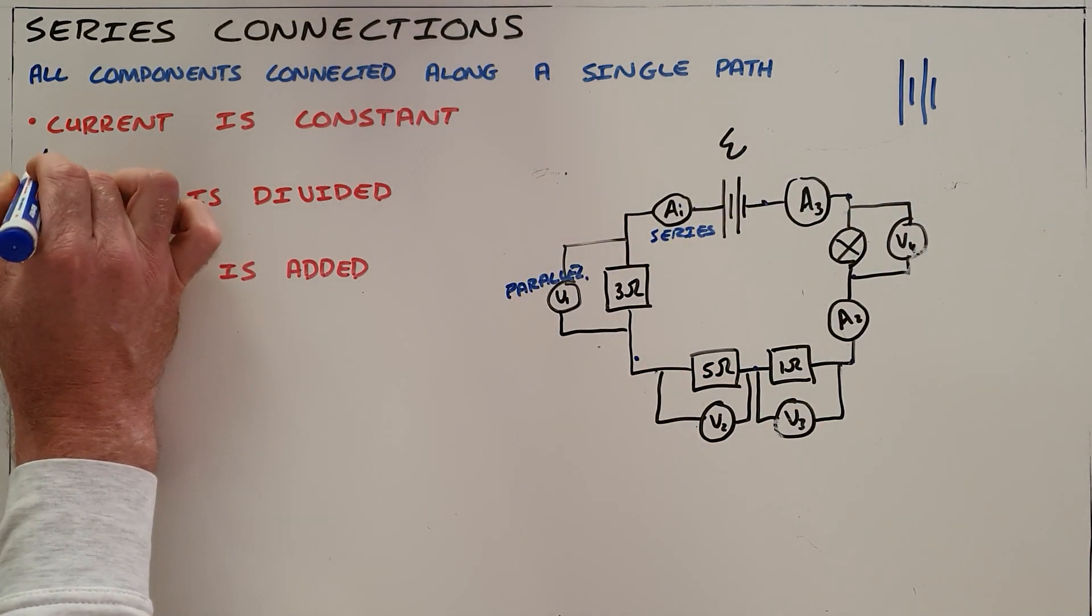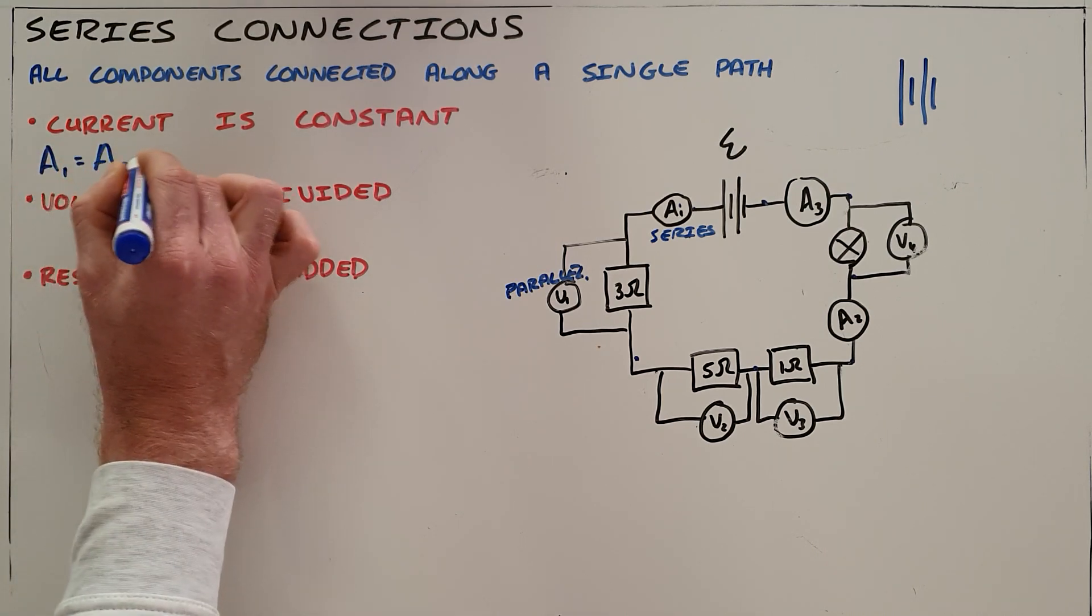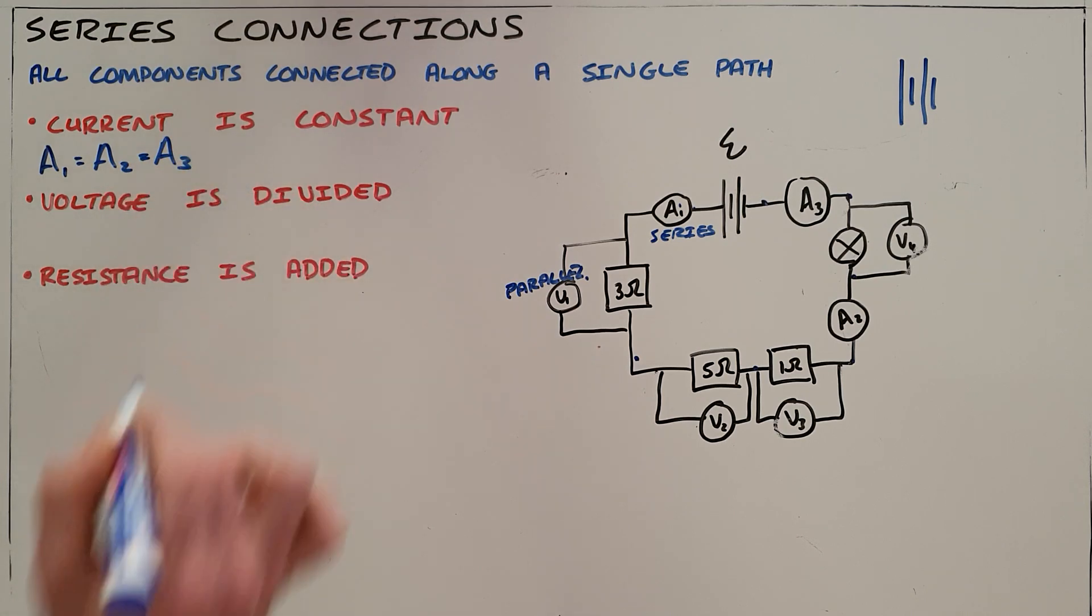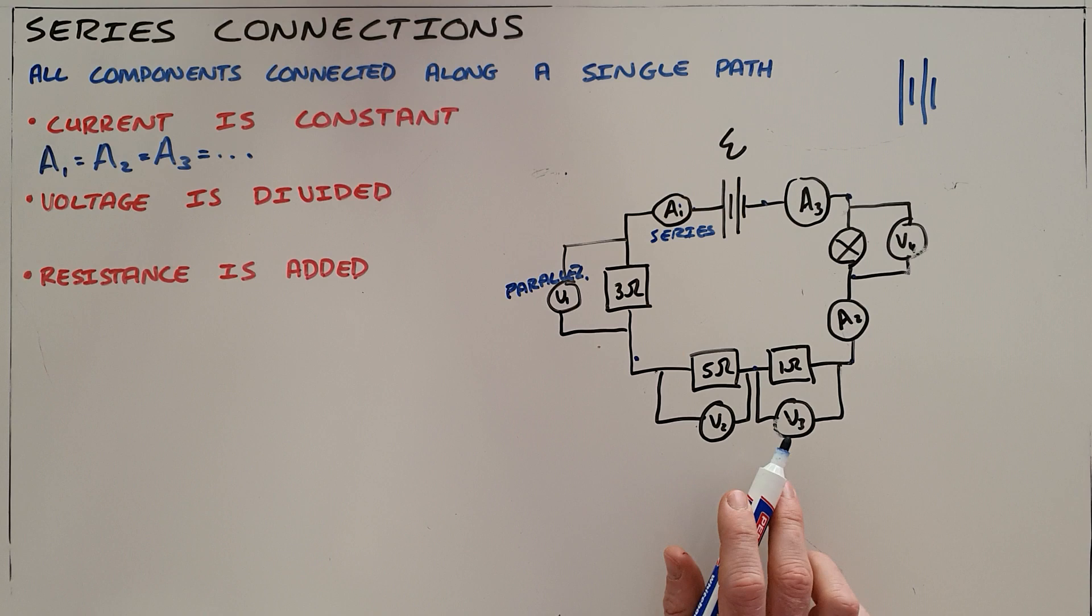And the way that we write that would be to say that the current through ammeter A1 is equal to the current through ammeter A2 which is equal to the current through ammeter A3, and that would continue for any ammeter that you place in the circuit.